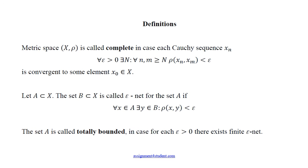Some useful definitions. Metric space is complete if any Cauchy sequence, here is the definition of the Cauchy sequence, is convergent to some element x_0. And the definition of epsilon net: Let A be some set from X, B is called epsilon net for A if for any element from A we can find very close element from B. The set A is called totally bounded if for any epsilon there exists a finite net.